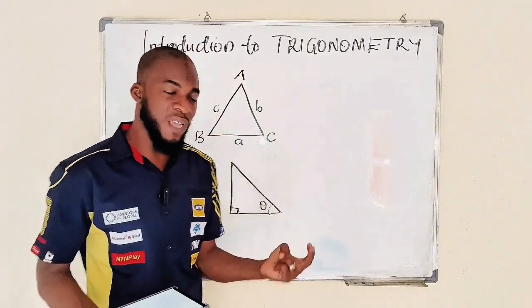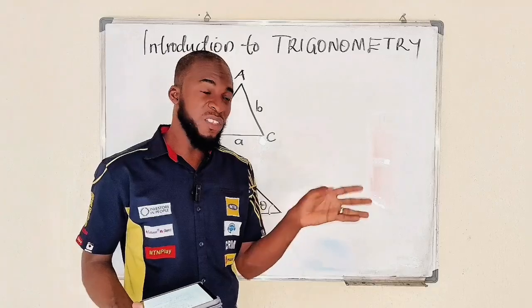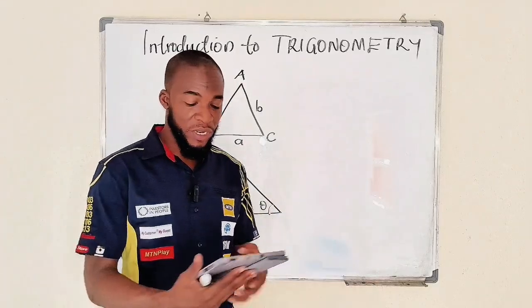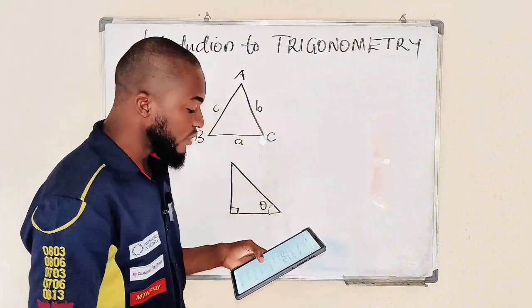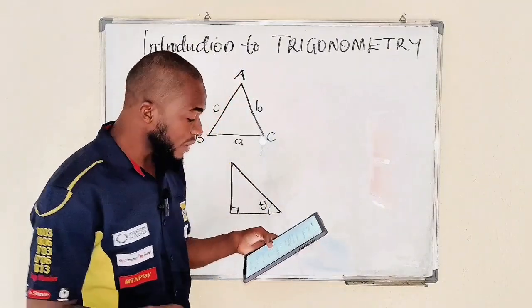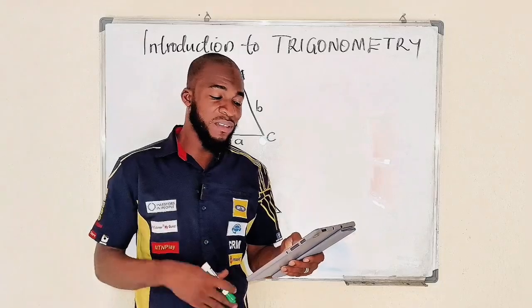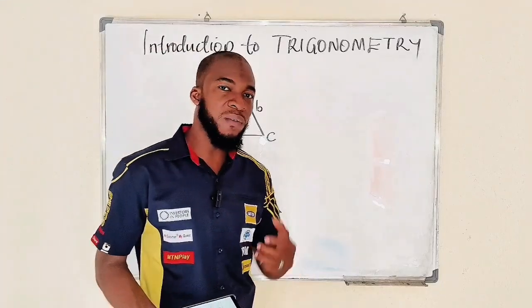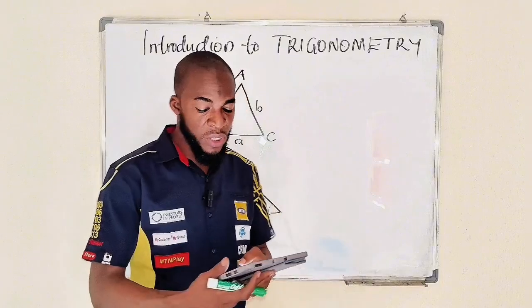The sine, the cosine, the tangent, and the reciprocals: cosecant, secant, and cotangent. We are going to talk about trigonometric identities—we have so many identities. We are going to talk about sine and cosine rules. We are going to talk about angles of elevation and depression.